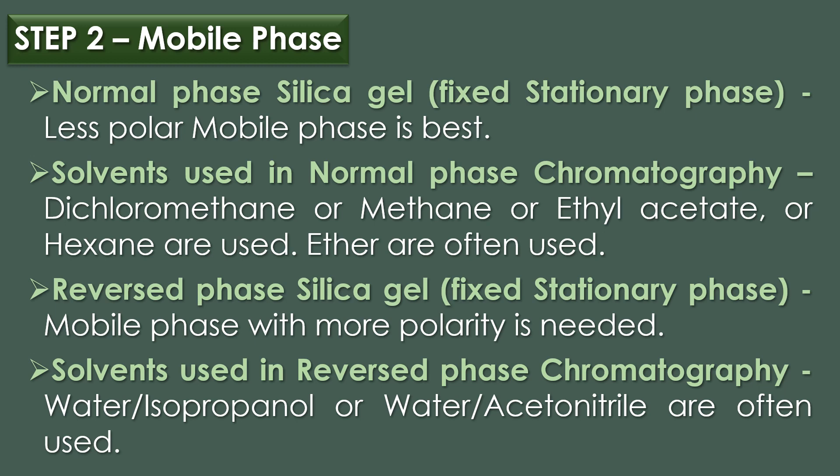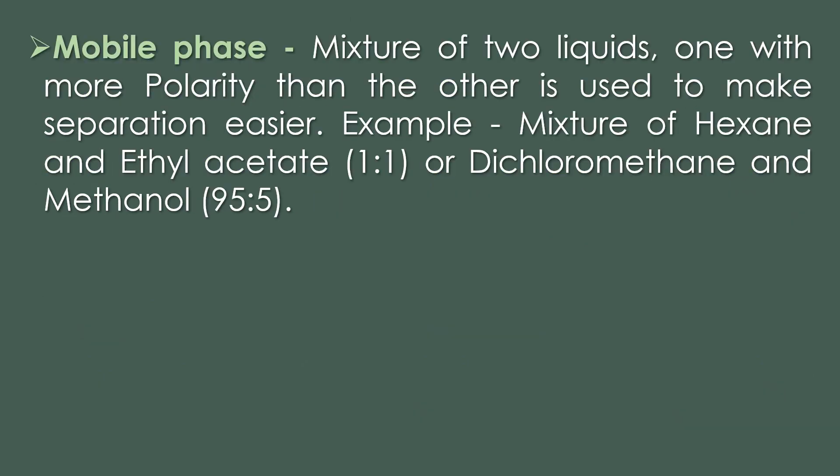If reverse phase silica gel is used as the stationary phase, a mobile phase with more polarity is needed. In reverse phase chromatography, solvents like water and isopropanol or water and acetonitrile are often used. Sometimes a mixture of two liquids — one more polar than the other — is used to make separation easier, for example hexane and ethyl acetate in a ratio of 1:1, or dichloromethane and methanol in a ratio of 95:5.